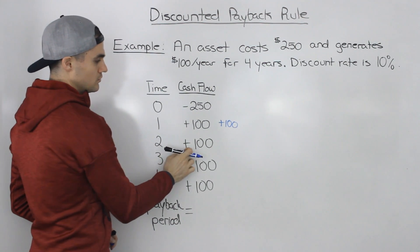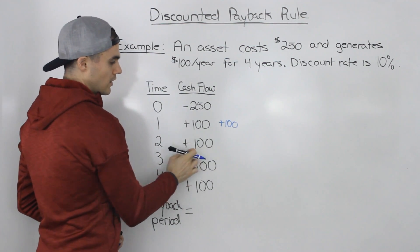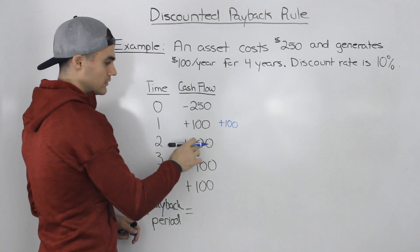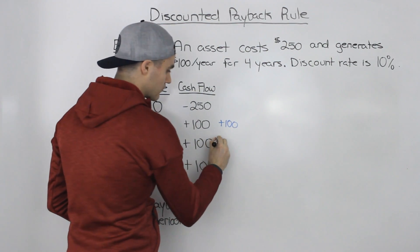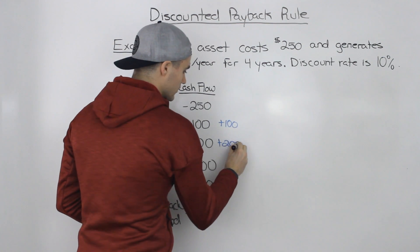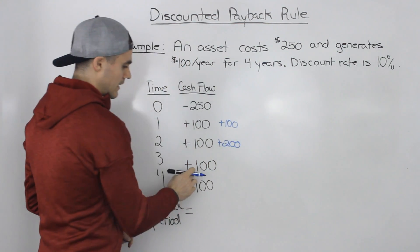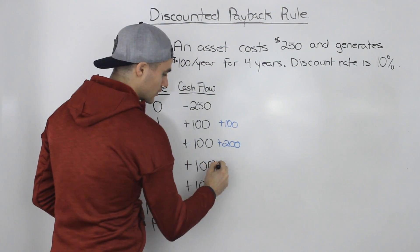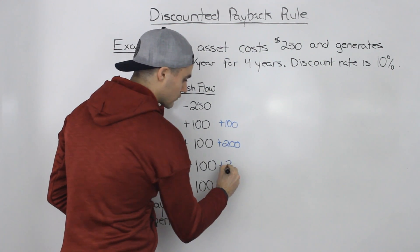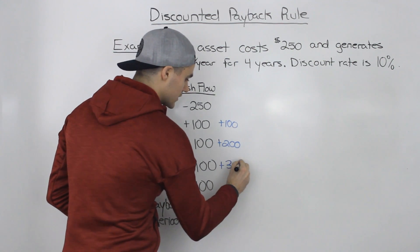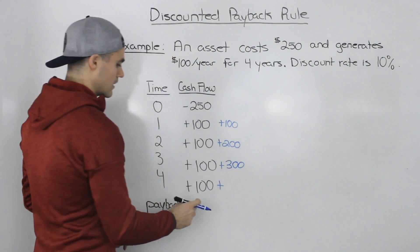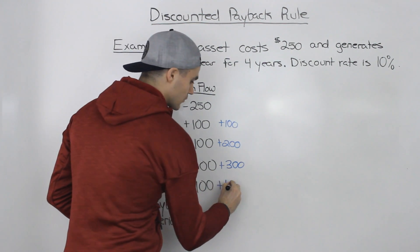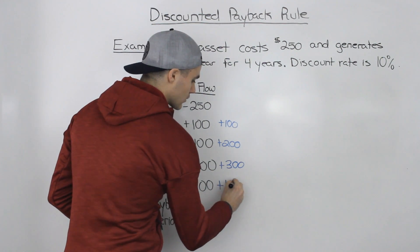Once we get to year two, we make another $100, so cumulatively we've recovered $200. In year three, we get another $100, so in total we've recovered $300. And then in year four, we get another $100, so in total we've recovered $400.